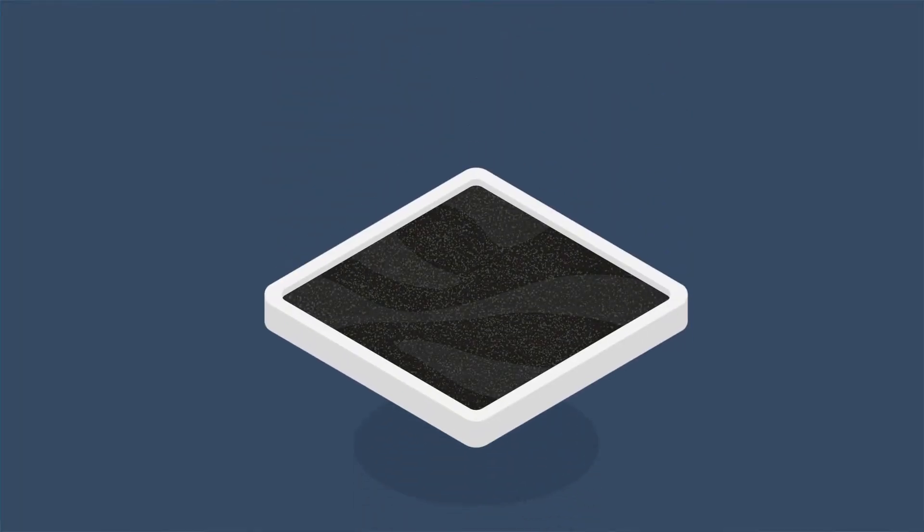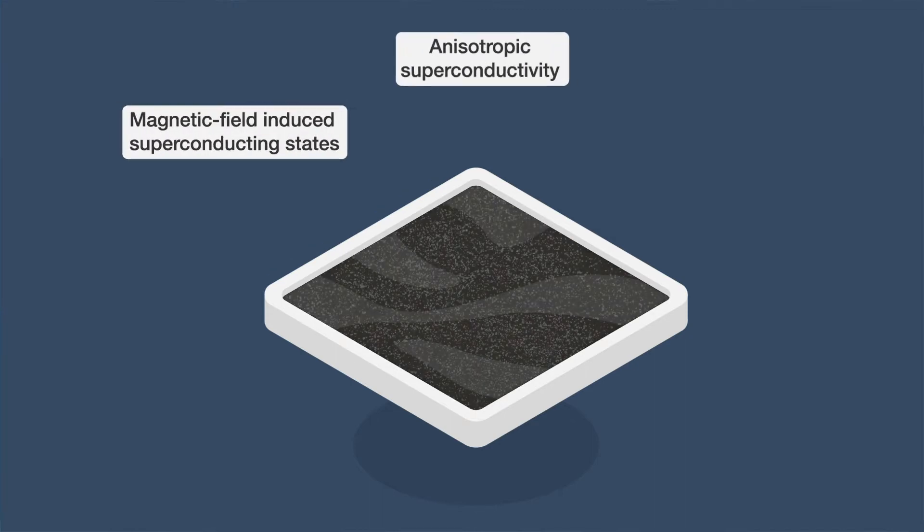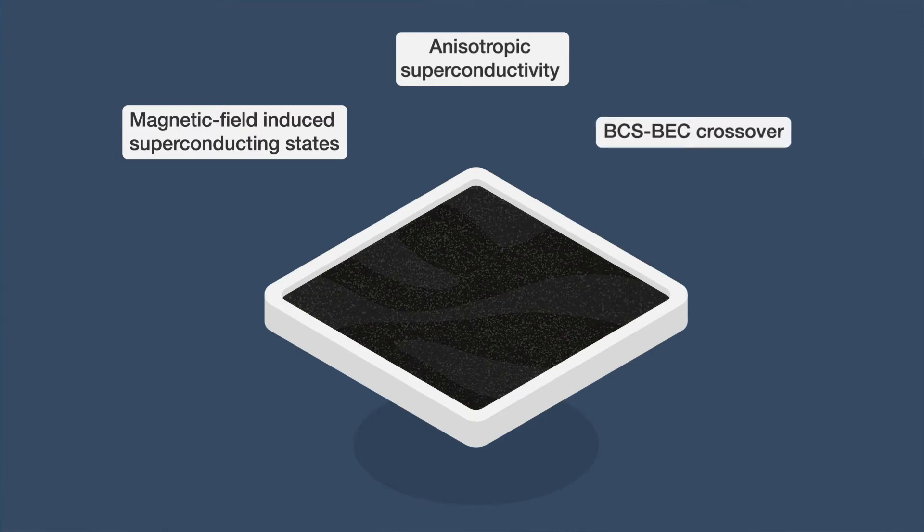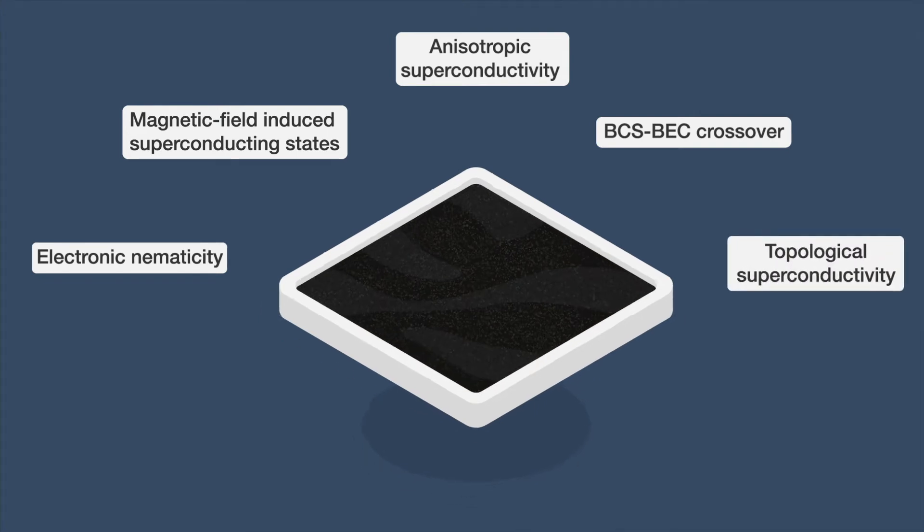In the article, they go over the exotic superconducting properties of iron selenide, such as anisotropic superconductivity, magnetic field-induced superconducting states, BCS-BEC crossover, electronic nematicity, and topological superconductivity,